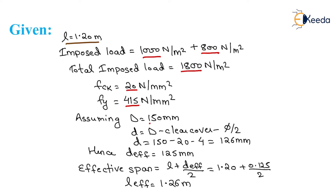Assuming D equals 150 mm, which is the overall depth. We calculate d equals D minus clear cover minus phi by 2. Here, we assumed diameter of bar as 8 mm. Putting values: 150 minus 20 minus 4, which equals 126 mm, approximately 125 mm.